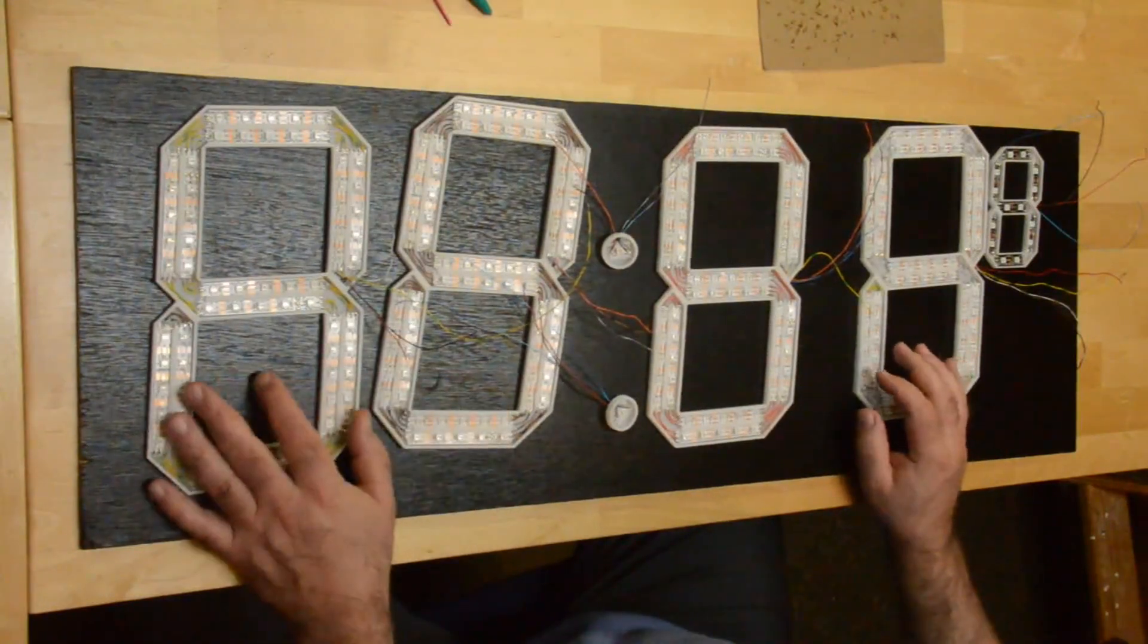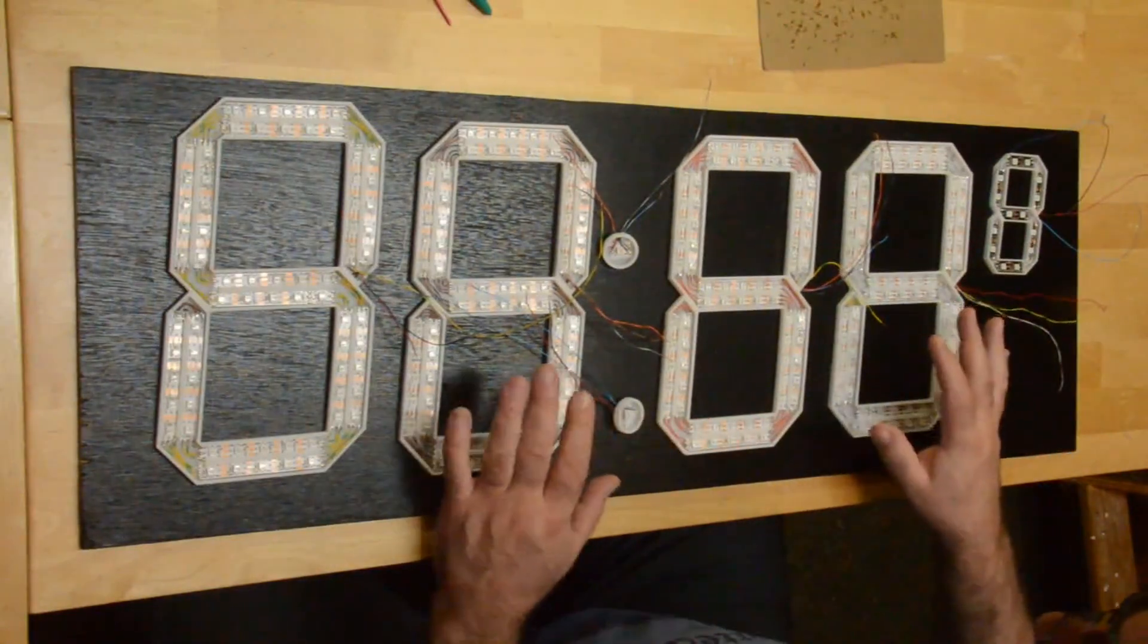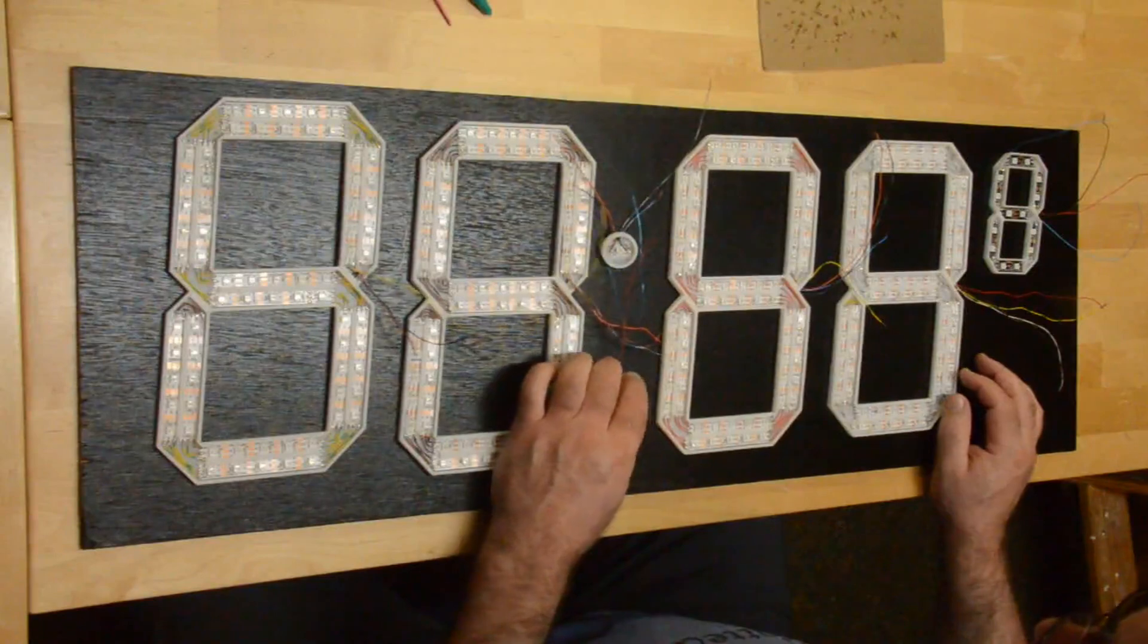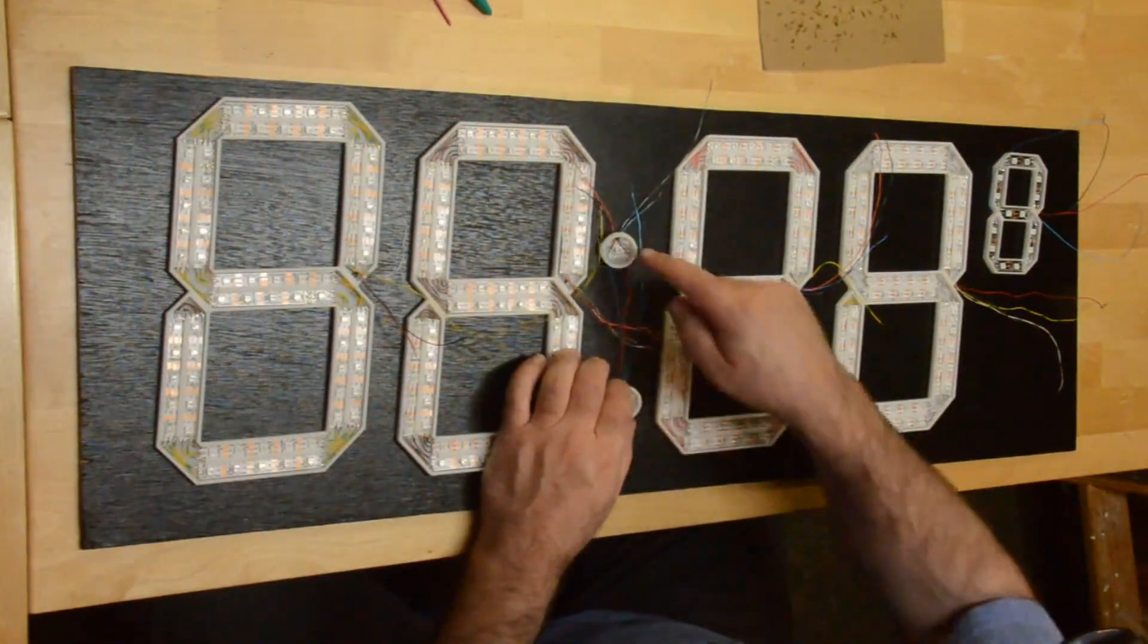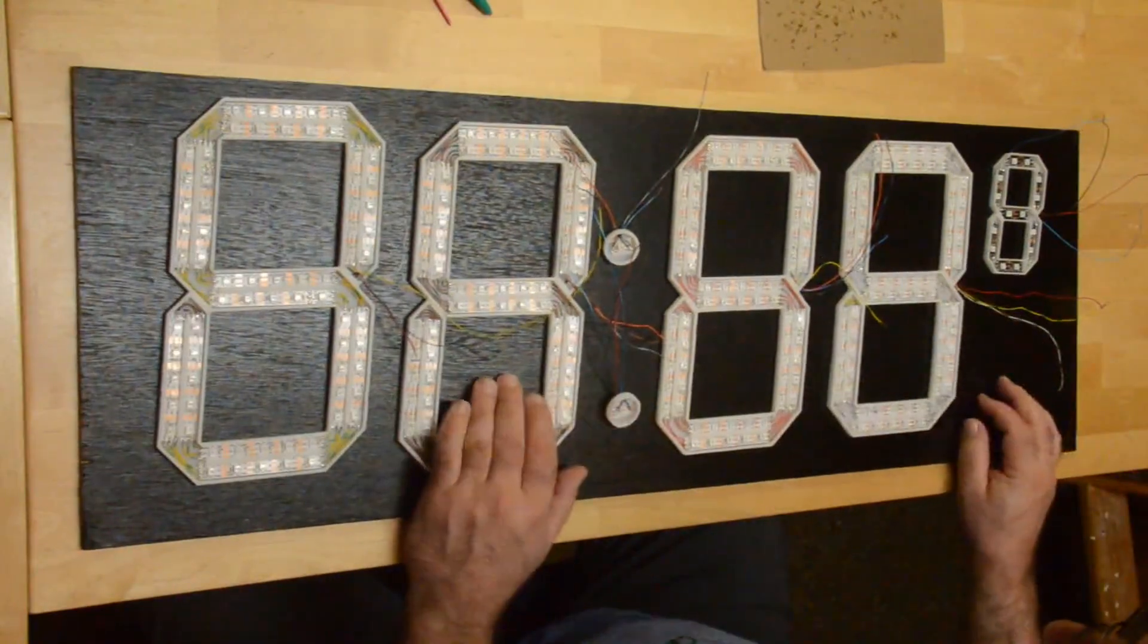What I'm thinking I'll do is I'll line these all up, and I will just hot glue them down to this piece of plywood that I painted black. Same with the dots here. I'll just drill little holes that line up with these access holes, and run all the wires out the back.